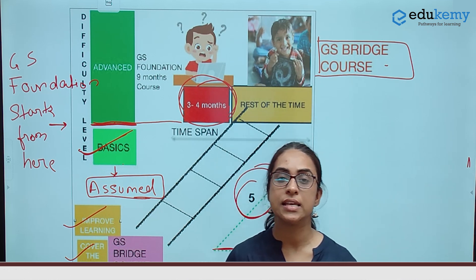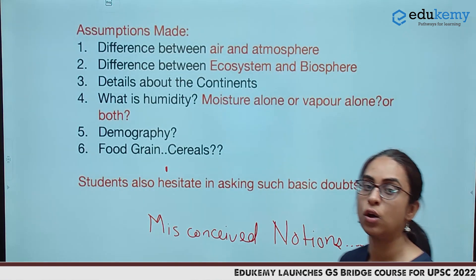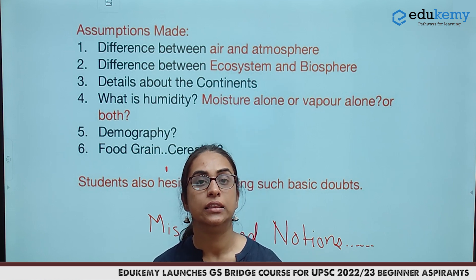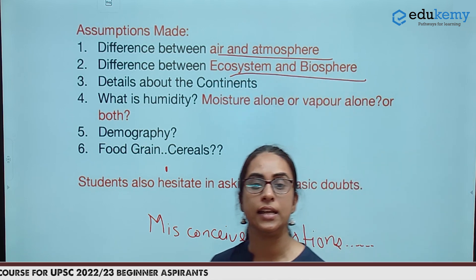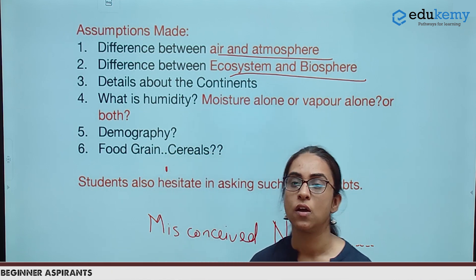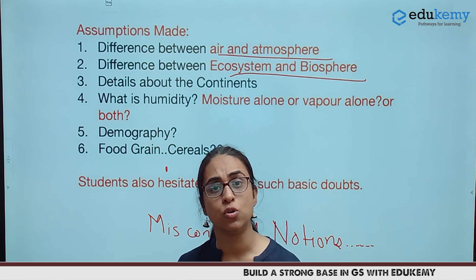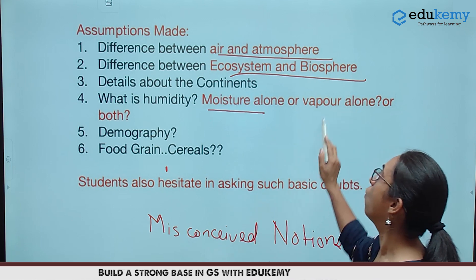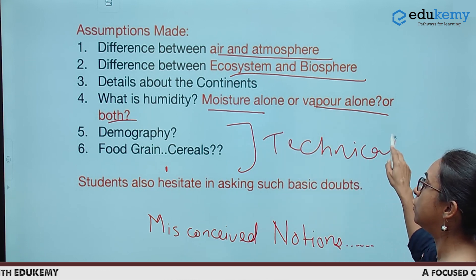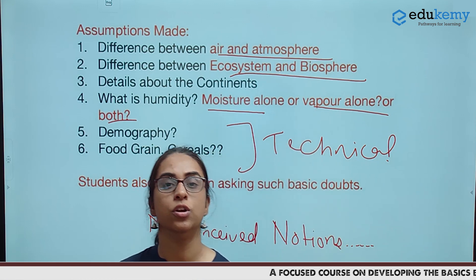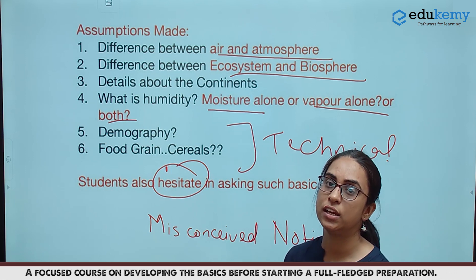When we say that certain basics are assumed from the students, let's understand what those basics are. Taking examples from geography itself, there are assumptions like the difference between air and atmosphere, the difference between ecosystem and biosphere, as well as certain details of the continents. When we start with humidity, we directly start with relative humidity and absolute humidity, and it is assumed that the student knows whether humidity is about moisture alone, water vapour alone, or both. Certain technical terms like demography and the difference between food grains and cereals are assumed to be known.